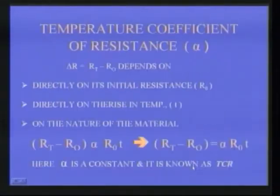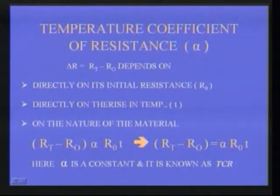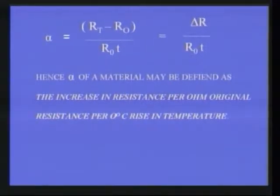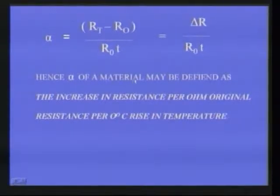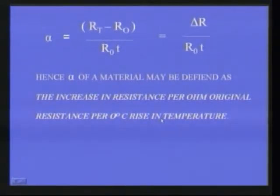Rewriting the formula: α = (RT − R0)/(R0·T), and putting RT − R0 as ΔR, the formula becomes α = ΔR/(R0·T). Hence, the temperature coefficient of a material is defined as the increase in resistance per ohm of original resistance per degree centigrade rise in temperature. The units for α are per degree centigrade.